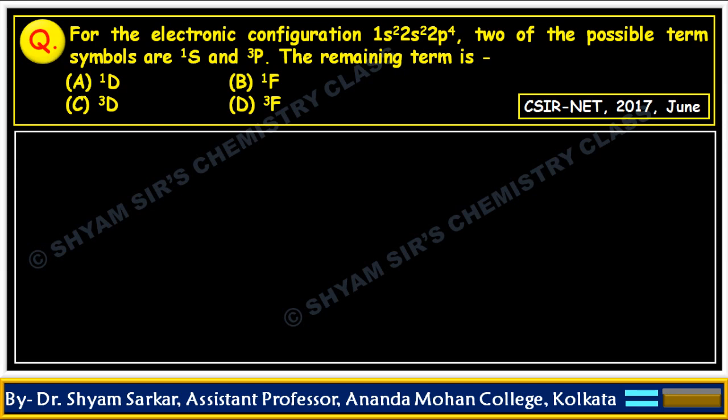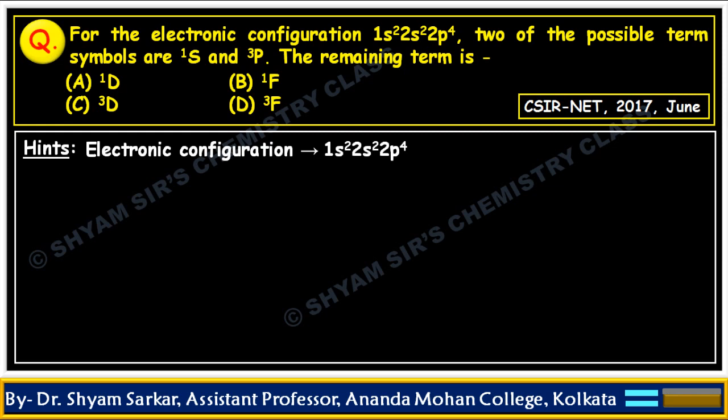For the electronic configuration 1s² 2s² 2p⁴, two of the possible term symbols are 1S and 3P, and you have to find the remaining term. Options are given. This is a very simple and easy question. The electronic configuration given is 1s² 2s² 2p⁴. Two term symbols are already supplied and the last one you have to detect.